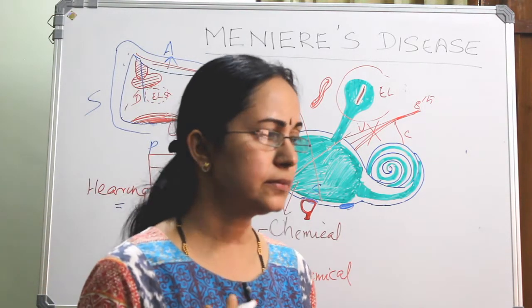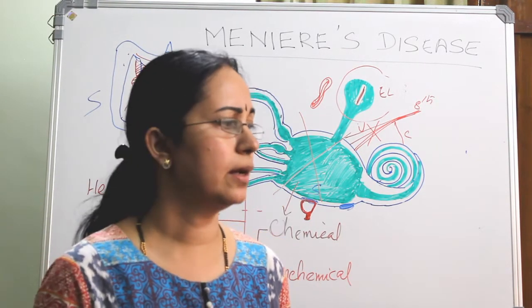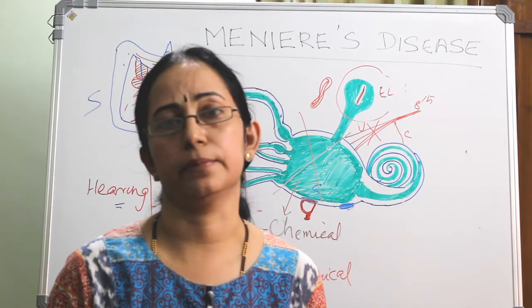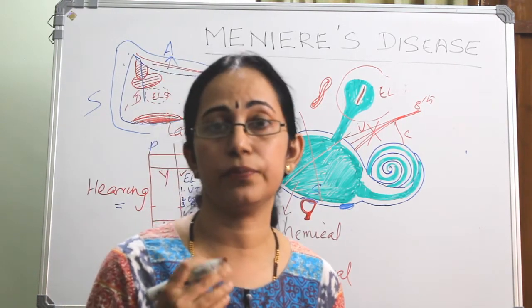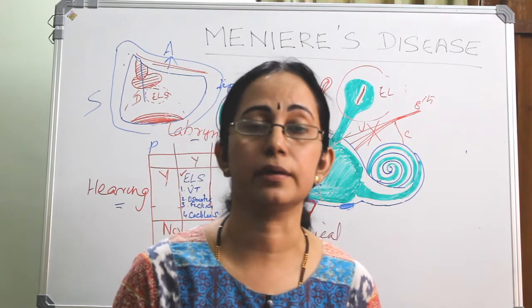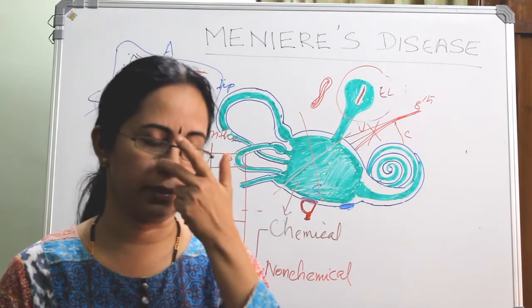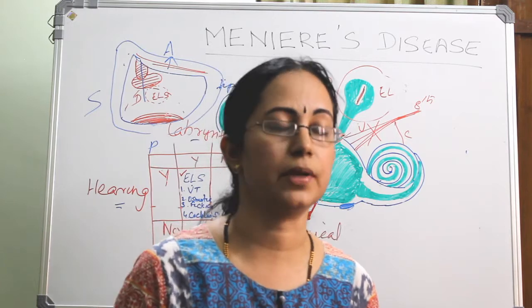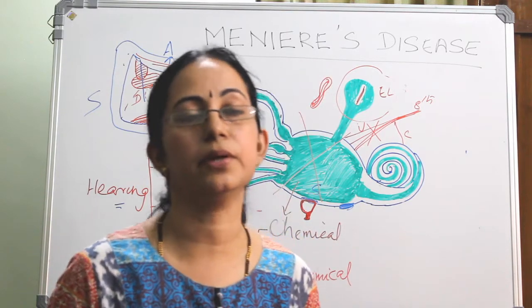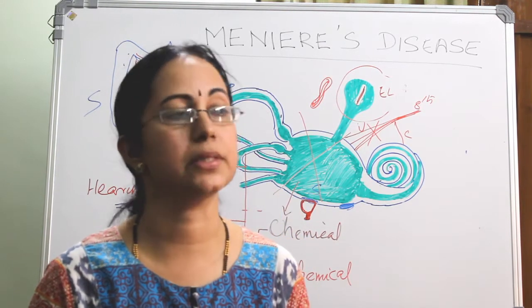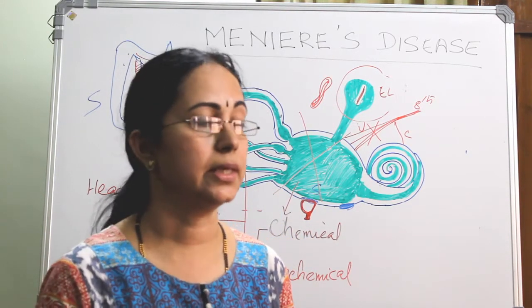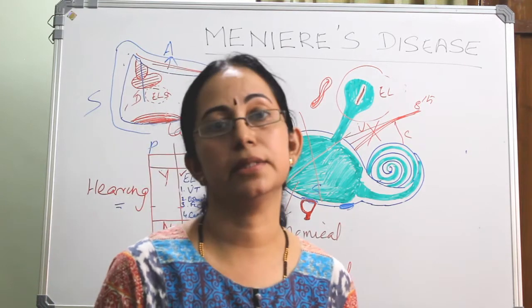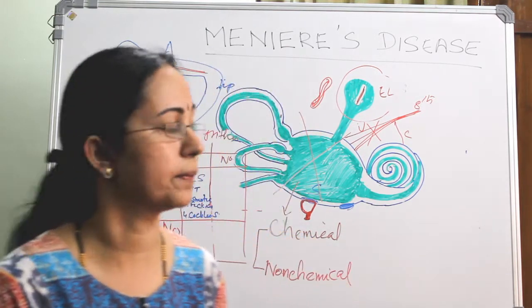In bilateral Meniere's, parenteral streptomycin is also given. But there is a chance of cochlear hearing loss. So the preferred method for chemical ablation is transtympanic or intratympanic injection of gentamicin.